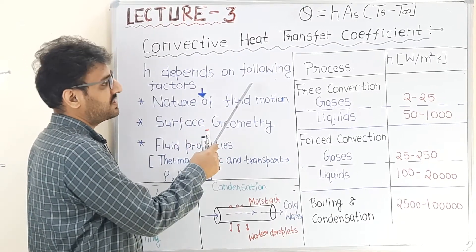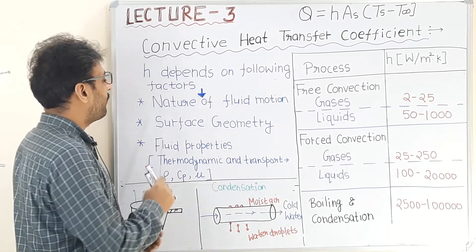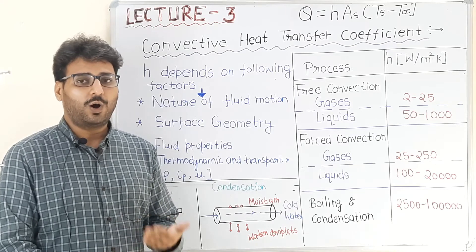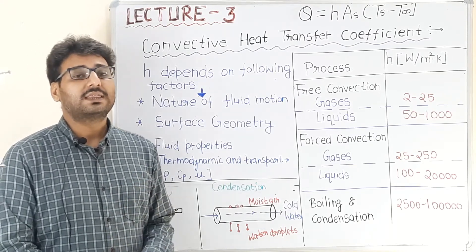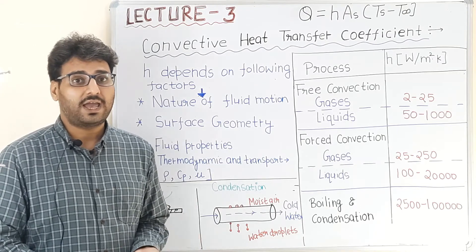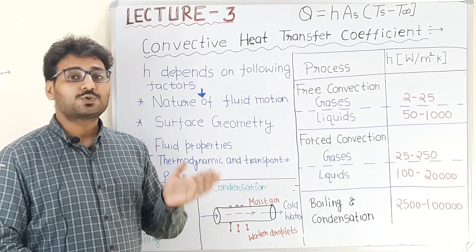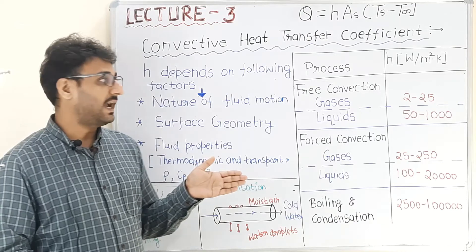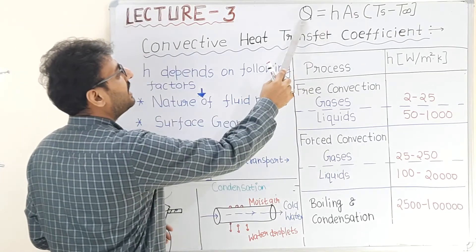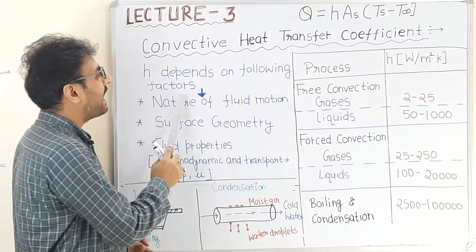Convective heat transfer coefficient is denoted by letter h and it depends on the following factors. First is nature of the fluid flow. In daily life, whenever we feel hot — meaning heat transfer rate from our body is slow — we switch on the fan. After switching on the fan we feel comfortable because heat transfer rate from our body to surrounding air increases. Scientifically, by increasing the velocity of fluid flow, h increases, and as h increases, heat transfer rate by convection increases.